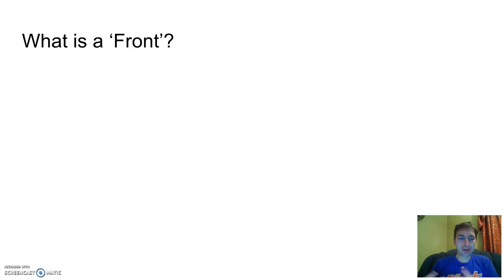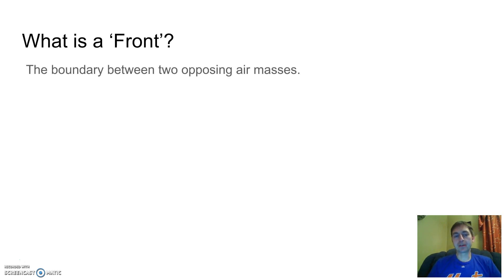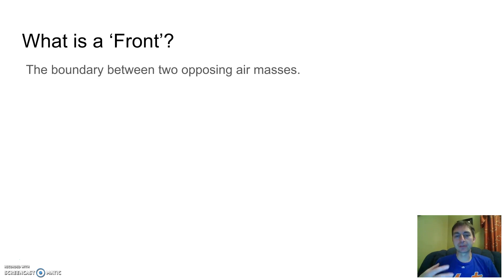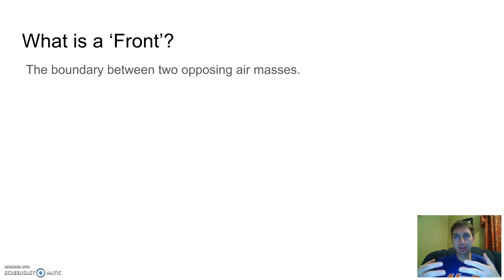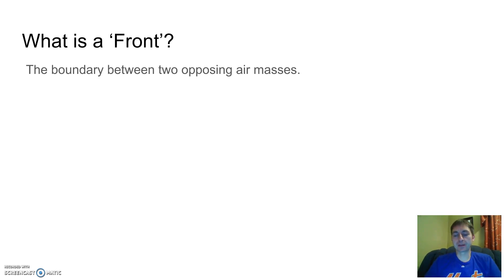So starting at the beginning — what's a front? It turns out that's the name meteorologists use for describing the boundary between two opposing air masses. Air masses are of different densities, so when they run into each other they don't mix easily — they stay separate, and there's a boundary between them where they don't easily mix.